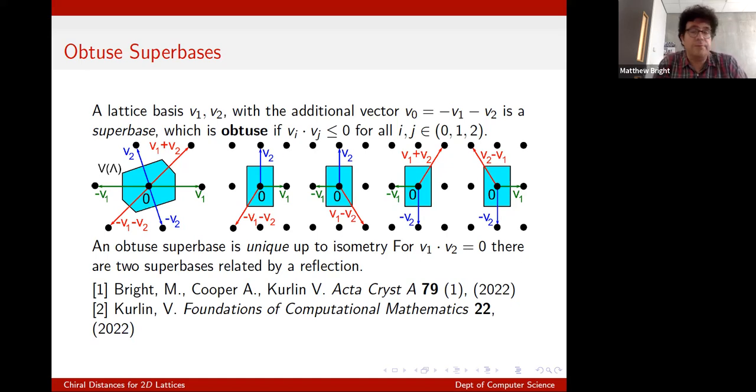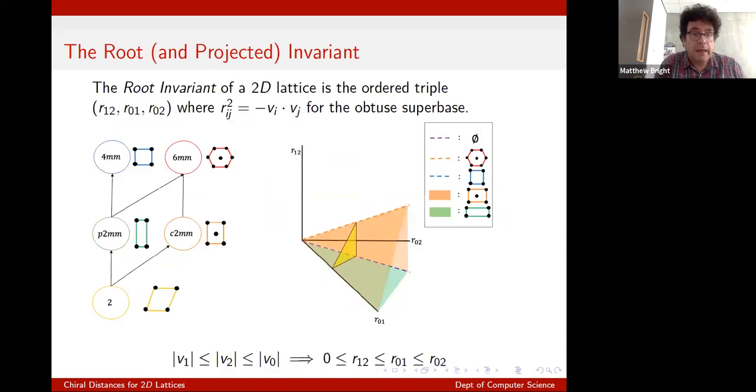So it turns out that among the many lattice reductions that give us a unique basis to generate a lattice from, the one derived by Selling, where the two basis vectors and their negative sum all have obtuse angles between them in two dimensions, is very usefully unique up to isometry, although not rigid motion. Because if you have a pair of orthogonal vectors in the super base, then you can have two classes of super base related by a reflection. And as a result, if you take the inner products of this obtuse super base, you get the root invariant, which is an isometry invariant of the lattice. So it's something that doesn't change when you move the lattice, when you rotate the lattice, or translate it, or indeed reflect it.